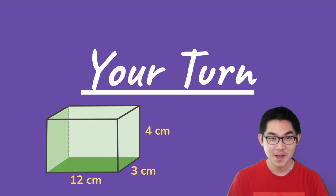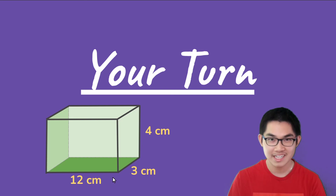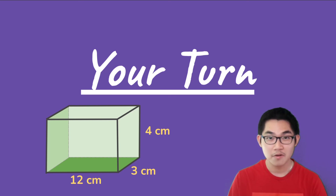Now it's time for you to practice! Go ahead and find the surface area and the volume of this rectangular prism — the length is 12 centimeters, the width is 3 centimeters, and the height is 4 centimeters. When you find the answer, please put it in the comments below. Thank you for watching — if you enjoyed it, please hit the like button and subscribe for more videos. Hope you have a good day and I'll see you in the next video!